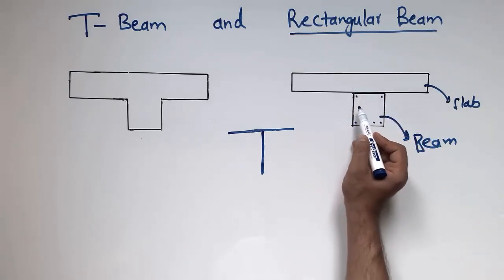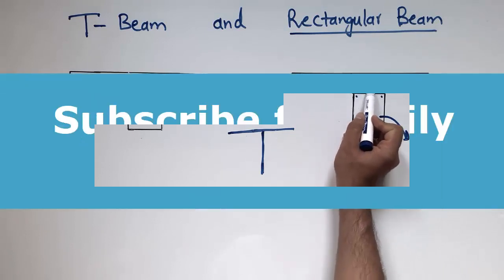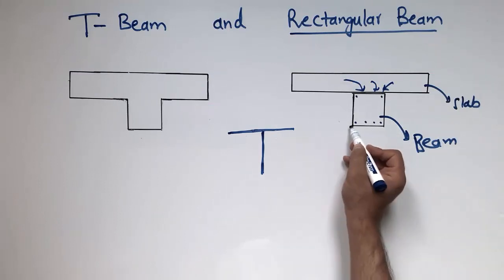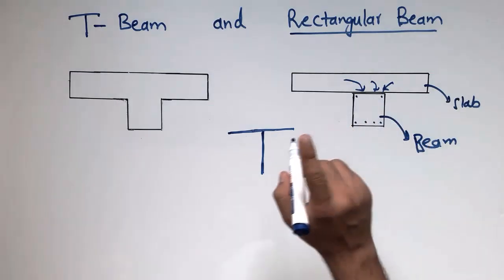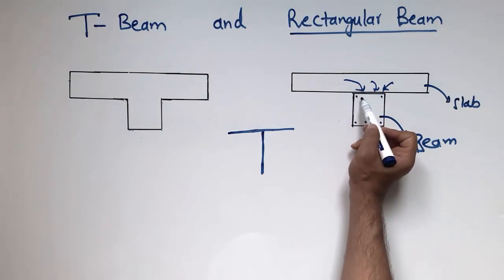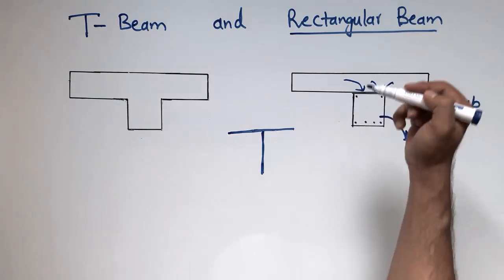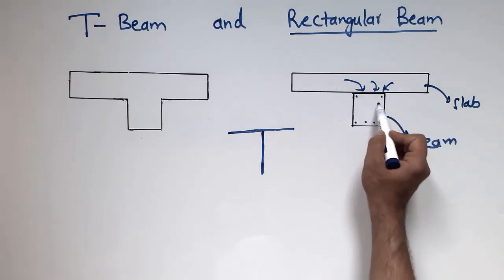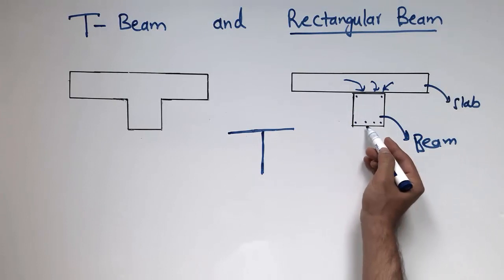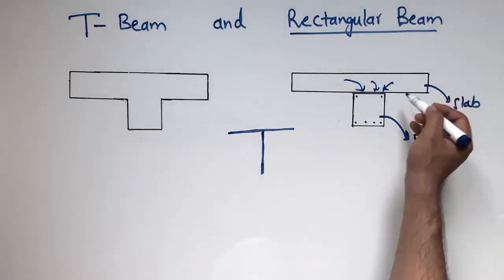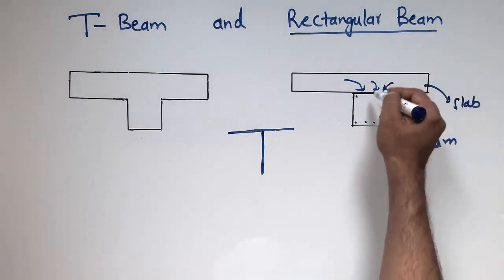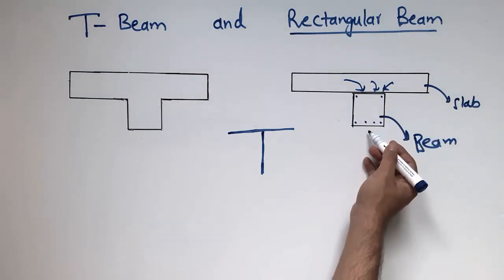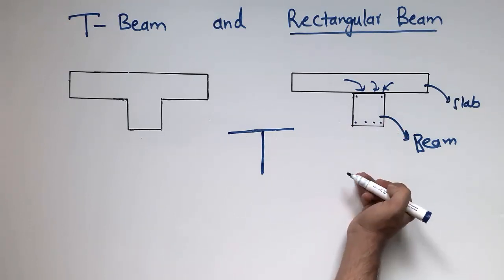We take into consideration the load of the slab acting on this beam. The definition of the rectangular beam is that it should have a rectangular cross-section and there should be no monolithic joint between the slab and beam — they act separately from one another. The beam is cast first with concrete, and then after hardening we place the slab on top of the beam.